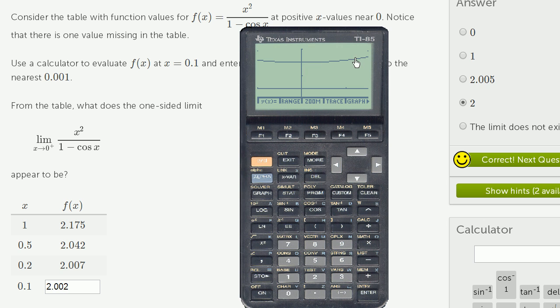But this problem we're only caring about as we have x values that are approaching 0 from values larger than 0. So this is the limit, this is the one-sided limit that we care about. But the 2 shows up right over here as well.